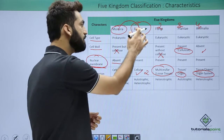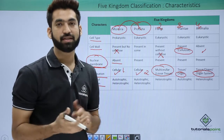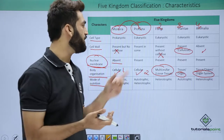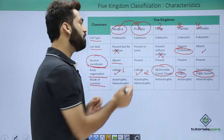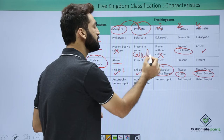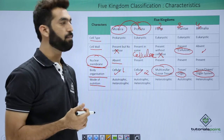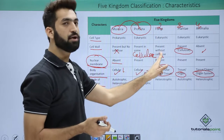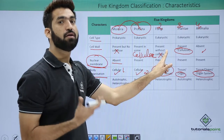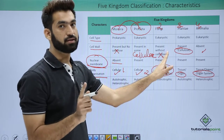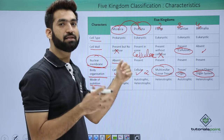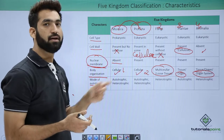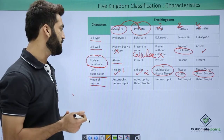In some Protista members the cell wall is present, in others it is not. For example, Euglena has no cell wall, while diatoms and dinoflagellates do have a cell wall made of cellulose. To summarize: Plantae has a cellulose cell wall; Animalia has no cell wall; Fungi has a chitin cell wall — chitin is also called fungal cellulose; Protista may or may not have a cell wall; and Monera has a peptidoglycan cell wall.